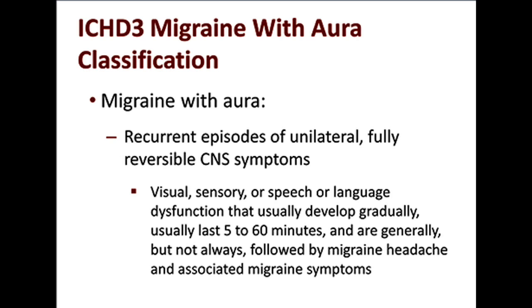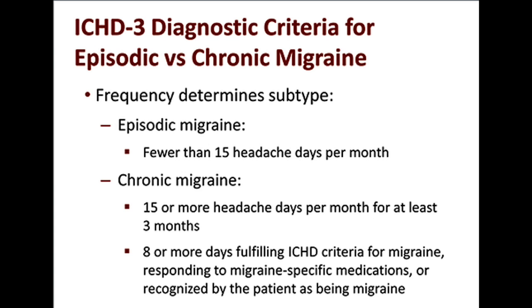The frequency of the attacks determines the subtype of migraine. Episodic migraine occurs less than 15 headache days per month. Chronic migraine occurs in 15 or more headache days per month for at least 3 months, and in those 15 or more headache days, at least 8 days must fulfill ICHD criteria for migraine, or respond to migraine-specific medicines, or are recognized by the patient as being migraine.